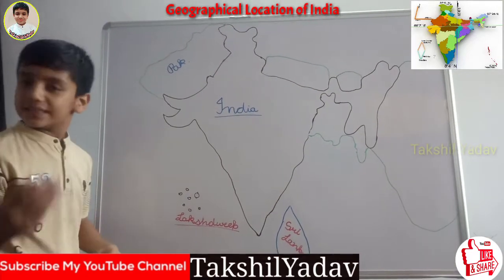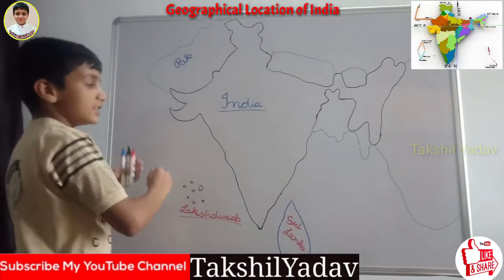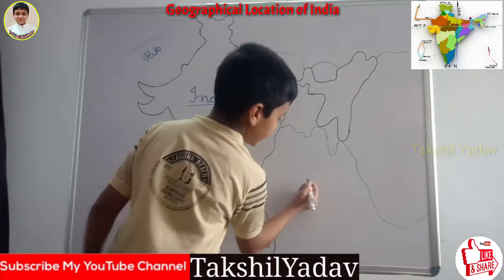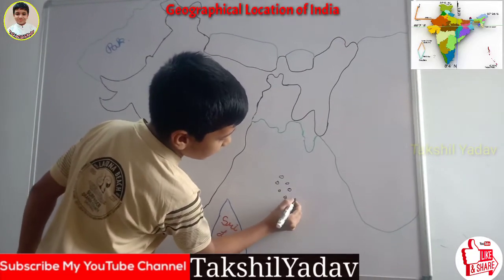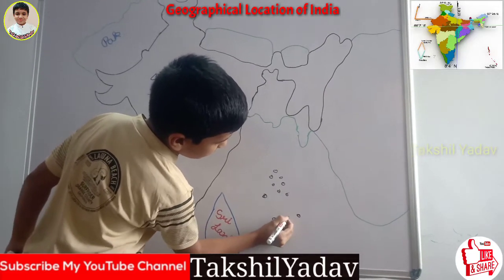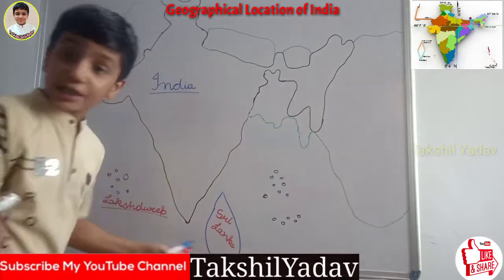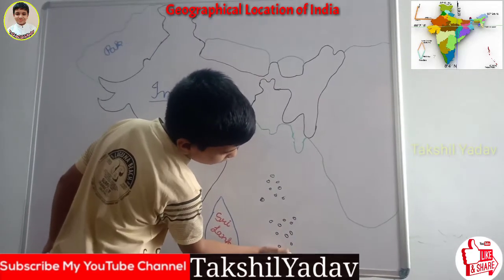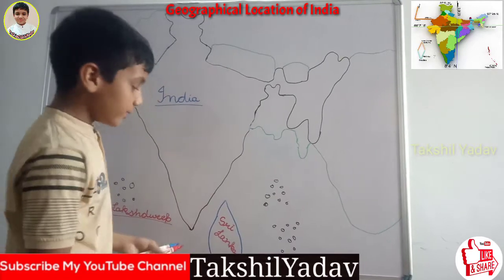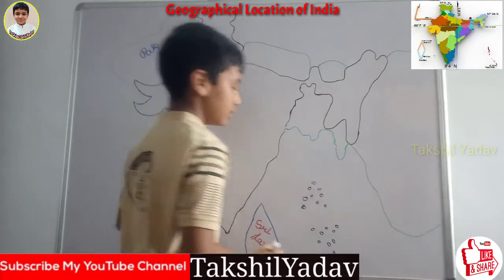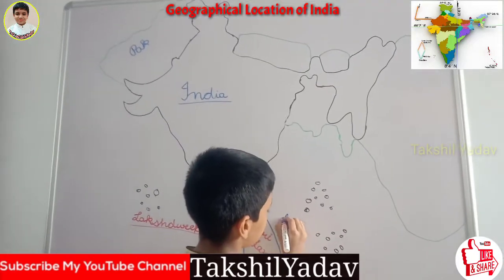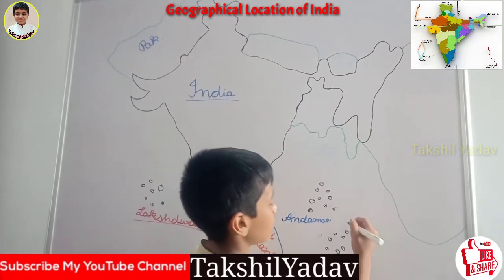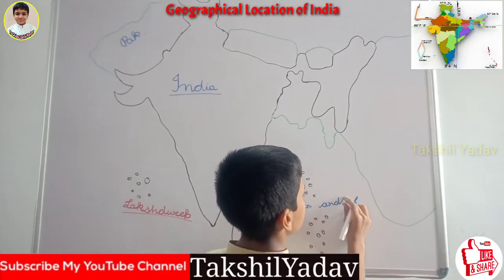The second group of islands, Andaman and Nicobar Islands, is present on the south east side. These are two groups of islands which are very close, thus they are named together. Andaman is one group and Nicobar is the other group, so together we call them Andaman and Nicobar Islands.